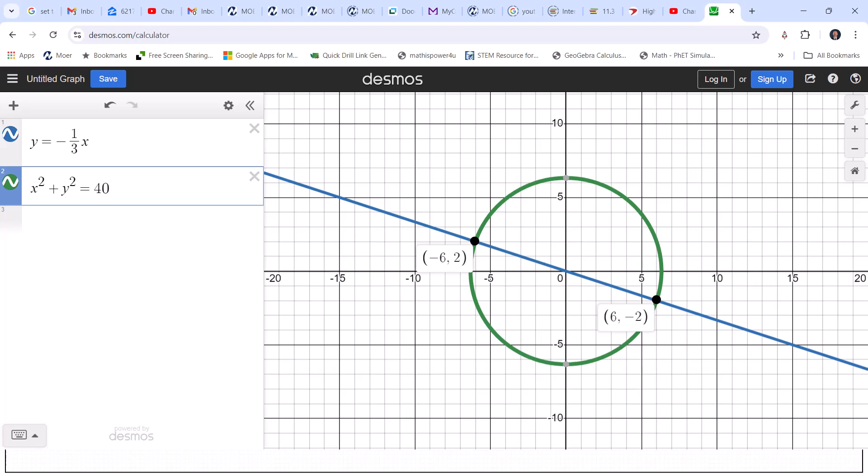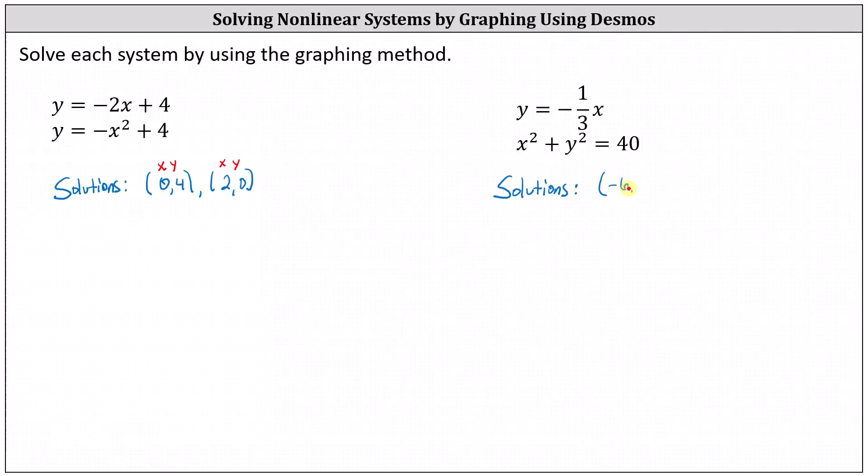Let's go ahead and record these. One solution is x equals negative six, y equals two and the second solution is x equals six and y equals negative two. I hope you found this helpful.